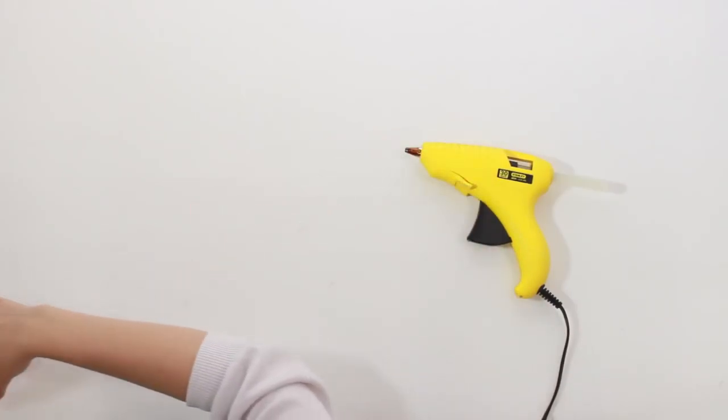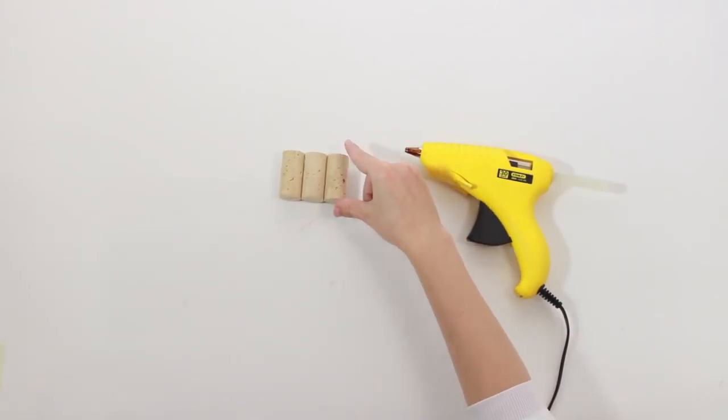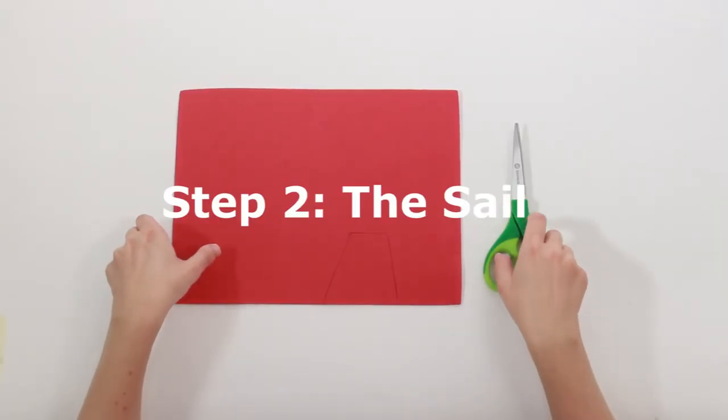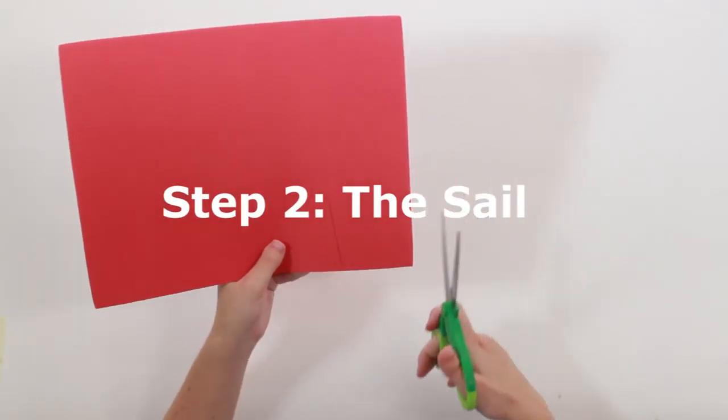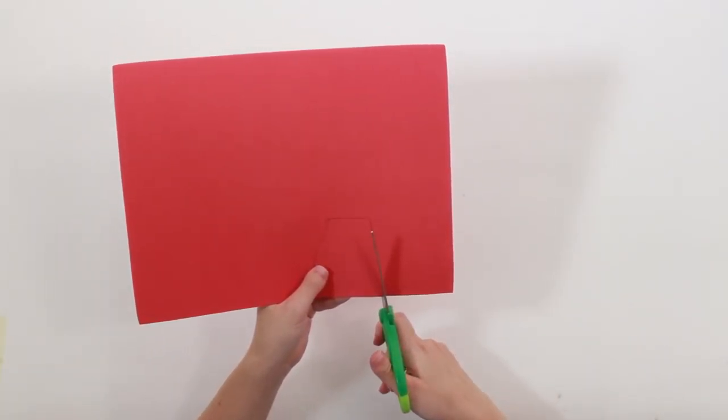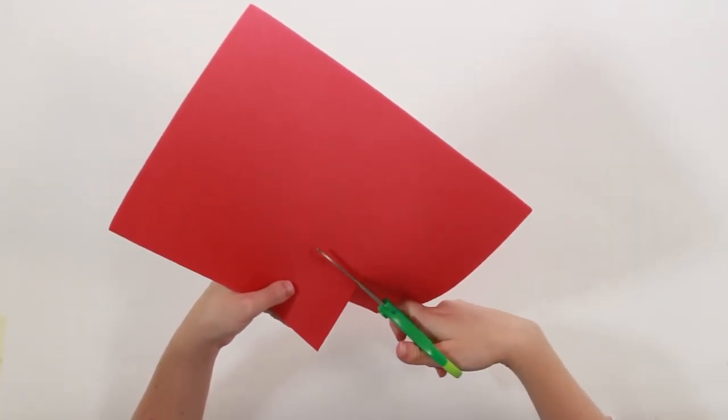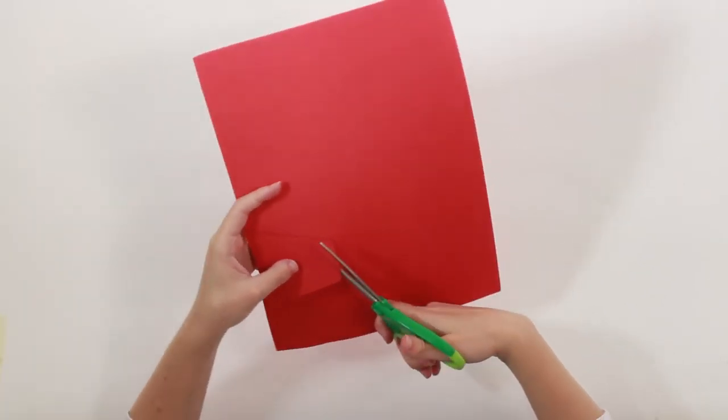Once you're done, it should look like this. Now you will take your Fun Foam and cut out a rectangular shape for the sail. Fun Foam is great for this because it is very light and it will repel the water when the boats are floating.